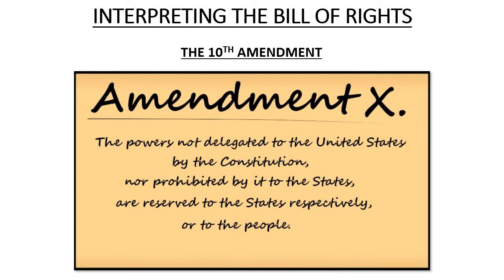The Tenth Amendment, returning to the push and pull between national power and state power, reads: the powers not delegated to the United States by the Constitution, nor prohibited by it to the states, are reserved to the states respectively, or to the people. Basically anything not listed in the Constitution or the Bill of Rights as a specific responsibility of the national government — like maintaining a military or coining money — and anything not explicitly prohibited to the states, is reserved to the states. This was the disclaimer the anti-federalists put in to ensure the national government wouldn't take more power than it should.